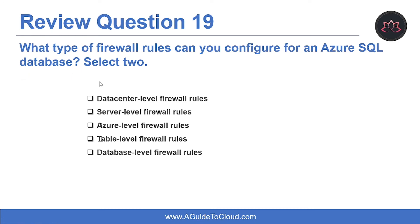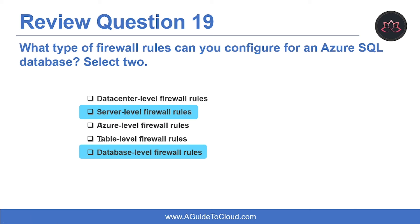Question nineteen: what types of firewall rules can you configure for Azure SQL Database? Select two. The answers are server-level firewall rules and database-level firewall rules. Server-level IP firewall rules enable clients to access your entire Azure SQL Database server; these rules are stored in the master database. Database-level IP firewall rules enable clients to access certain specific databases within the same SQL Database server and are stored in the individual databases.